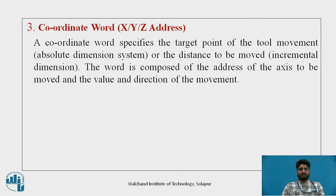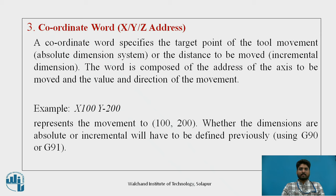Third is the coordinate word — X, Y, Z addresses. A coordinate word specifies the target point of the tool movement in the absolute dimension system, or the distance to be moved in the incremental dimension. The word is composed of the address of the axis to be moved, the value, and the direction of movement. For example, X100, Y200 represents movement to the coordinate (100, 200), which can be absolute or incremental, defined previously using G90 or G91. G90 is for absolute and G91 is for incremental.